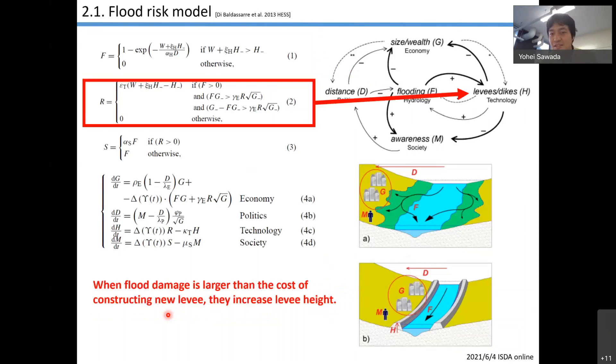This equation shows how people construct levees. When flood damage is larger than the cost of constructing new levees, they're going to increase the levee height. And the amount of increasing levee height depends on the past damage. I think it is reasonable.